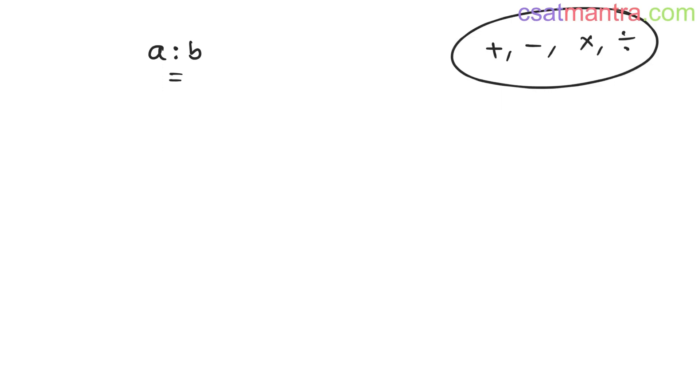We have a ratio A is to B. How do we express this in terms of mathematical operations? We have four operations in mathematics: addition, subtraction, multiplication, division. Every other operation boils down to these four. The ratio symbol represents division, my friends.